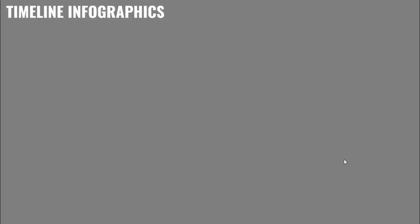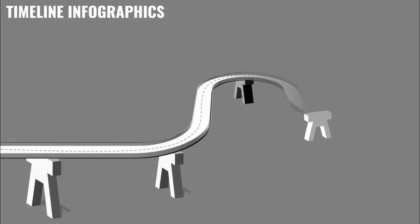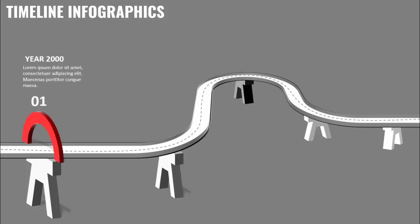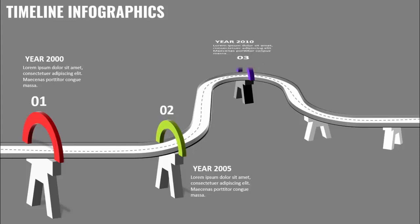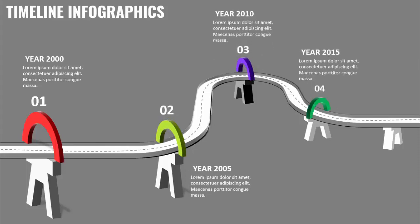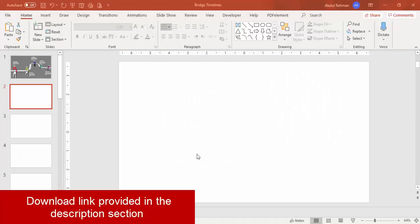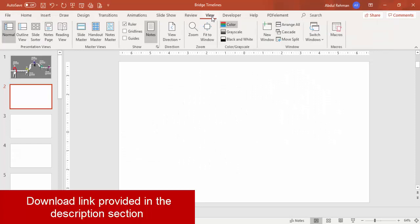In today's tutorial I'm going to show you how to make a creative timeline infographic slide in PowerPoint. When I click you can see a bridge building up, then it shows the first option year 2000, and then you can add the second, third, fourth, and fifth options. Let's see how to do this in PowerPoint.